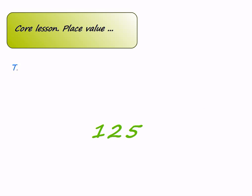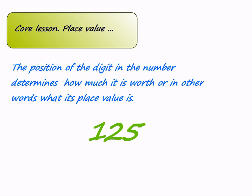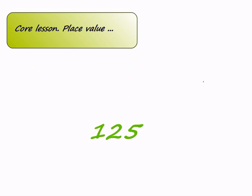Core lesson — place value. The position of the digit in the number determines how much it is worth, or in other words, what its place value is. Let's have a closer look at the number 125. The first digit from the left is the hundreds place, which is 1 in the example. It tells you how many sets or groups of 100 are in the number. So 1 represents 100 — its place value is 100.